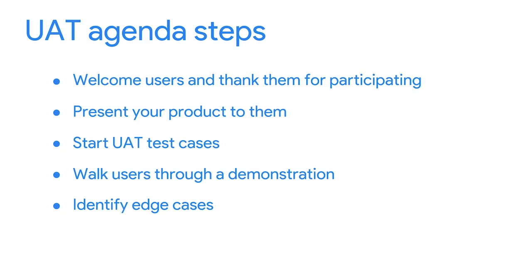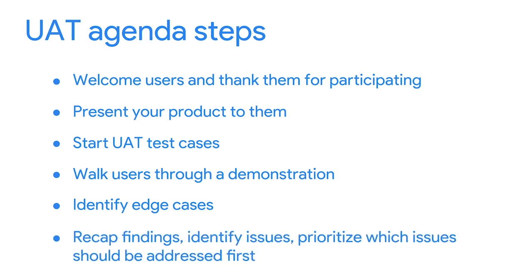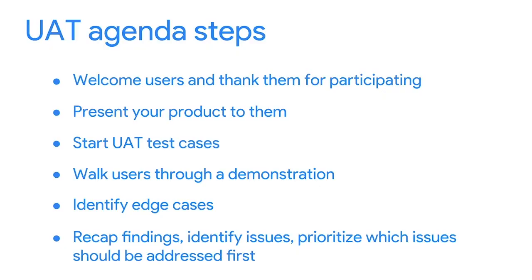During testing, your users will be able to help you identify edge cases — rare outliers that the original requirements didn't account for, dealing with the extreme maximums and minimums of parameters. For example, imagine you created an app that allows for unlimited photo uploads, knowing that users will rarely upload more than a thousand photos in a single session. How will the system deal with someone who actually does upload thousands or millions of photos in a single upload? After identifying edge cases, the last step of the UAT agenda is to recap your findings, identify bugs or issues, and prioritize which issues need to be addressed first. Then you'll be able to close and conclude your user acceptance testing.